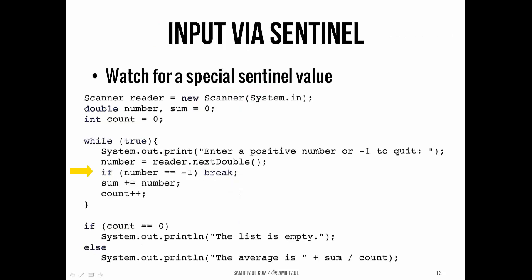One last thing for today: another way we can use nested control statements is to watch for sentinel values that help us break out of a loop. Here's a quick example: we've got a scanner and we prompt the user to enter either a positive number or -1 to quit. We take the number using our scanner object. If that number is -1, we break out of the loop. Negative one is the sentinel value — it's not one of our eligible inputs since we're only looking for positive inputs. So if they enter -1, we break out; otherwise, we add the number to our running sum and increment count, which tracks how many values we've gotten from the user.